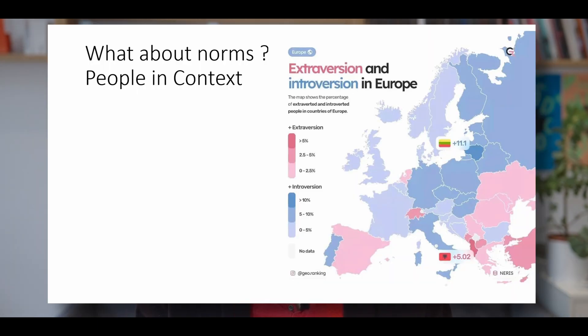Let me explain. Here is a map of extraversion and introversion in Europe. As you can see, people are generally more extraverted in Spain as opposed to Finland. Now, let's picture a typical average Spanish person. This person looks like most people in Spain. Now, let's move this person to Finland — all of a sudden, the same person in another context looks different. This is exactly what we do with CHESS 2. The structural summary tells you who the person is, and the new profile sheet using national reference samples tells you how this person looks in context.